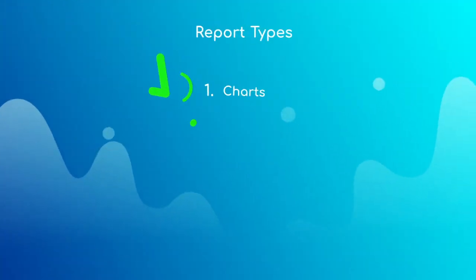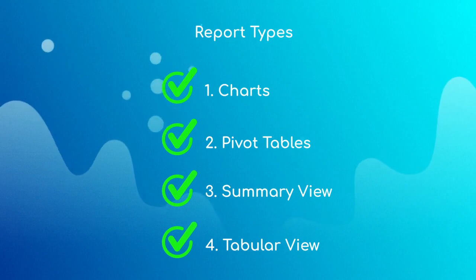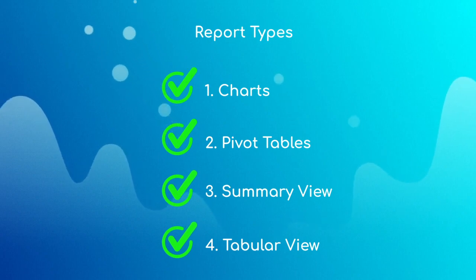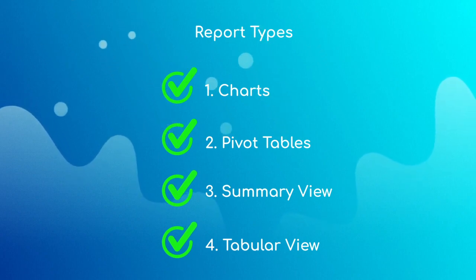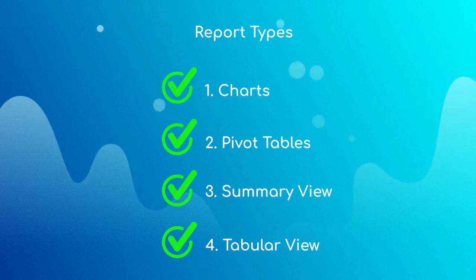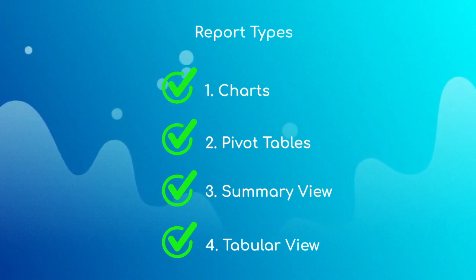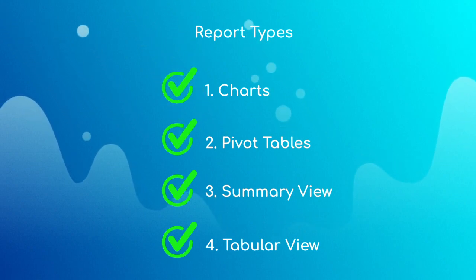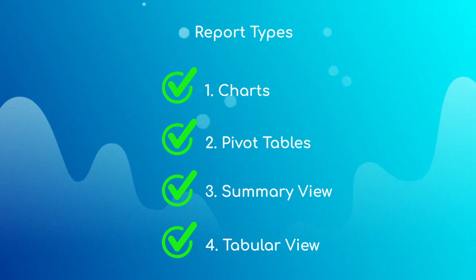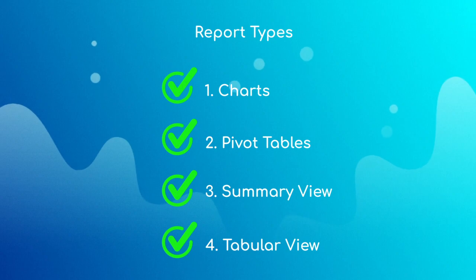A chart is a visual representation of data that allows you to effectively analyze and interpret data. Pivot Table allows you to dynamically rearrange, group, and summarize data for easy analysis of large sets of data. Summary View enables you to view your summarized data in tabular formats. Tabular View will help you display data in a simple tabular format.